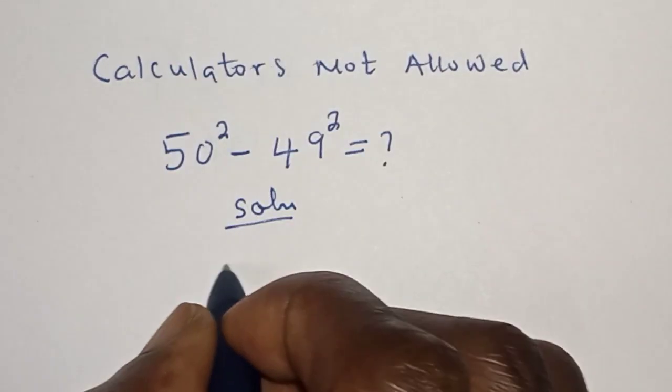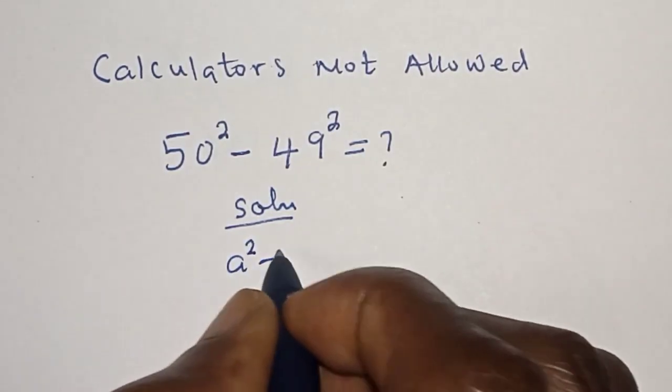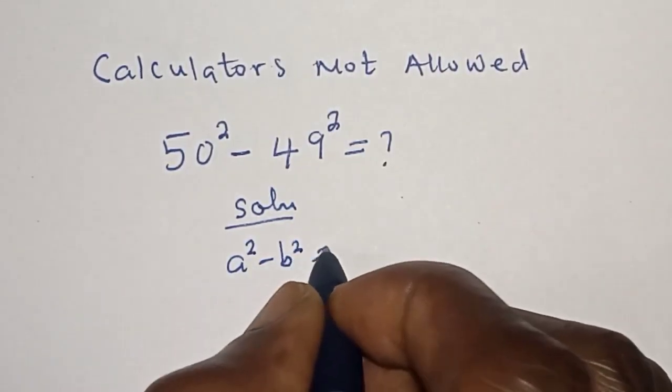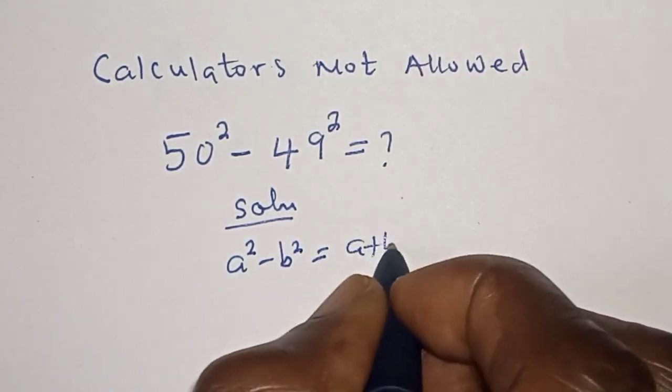Take note of this rule: a squared minus b squared is equal to a plus b bracket a minus b.